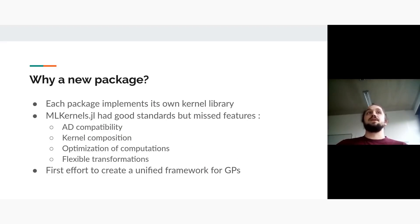Okay, so why did we decide to create this package? Well, the thing is, every Gaussian process package or other type of packages was basically implementing its own kernel library, which seemed a bit of redundancy. So we had also one package called MLKernels.jl, which had really good standards and was a pretty good package, but it was lacking really big features. Automatic differentiation was one of them, being able to make composition of kernels. The computations were not always optimal. Anyway, this package, kernelfunctions, was really the first step in trying to make a unified framework for Gaussian processes and kernel methods in general.